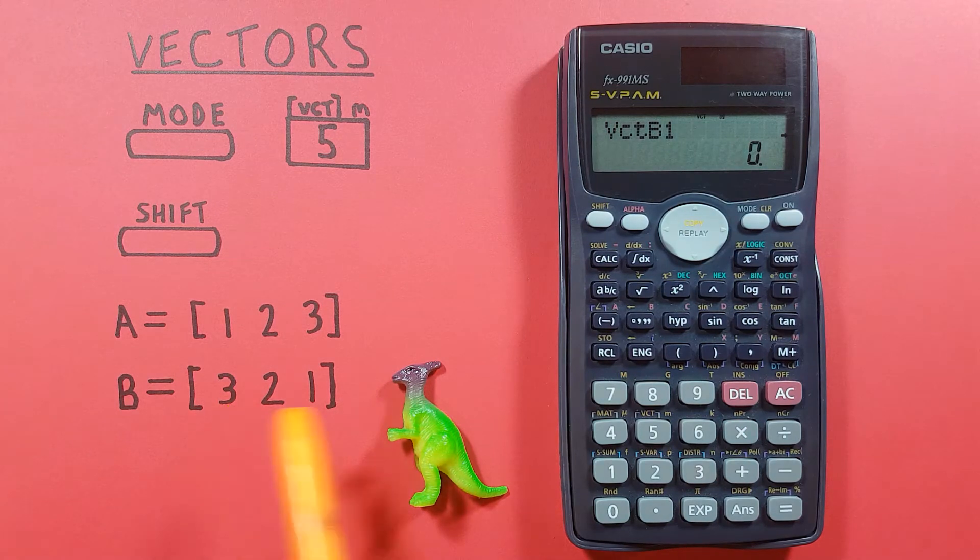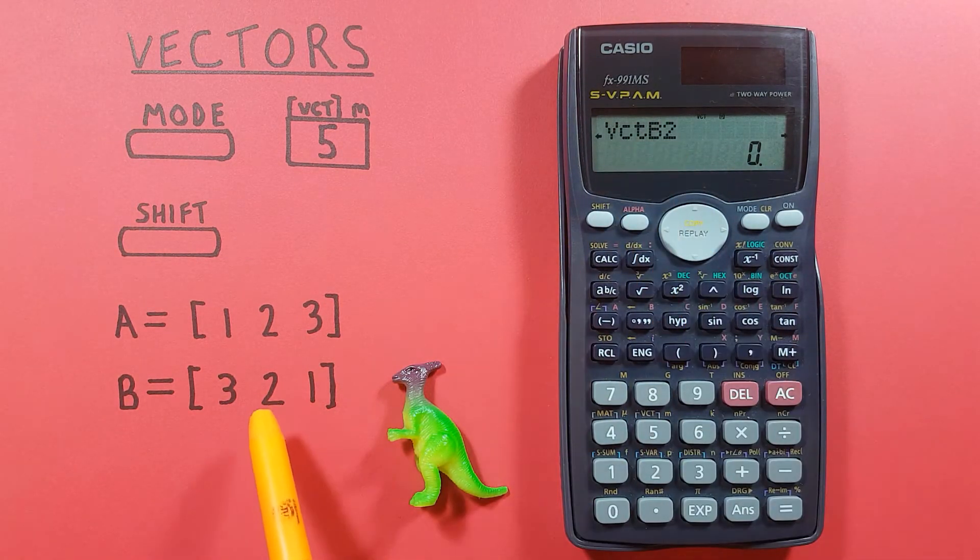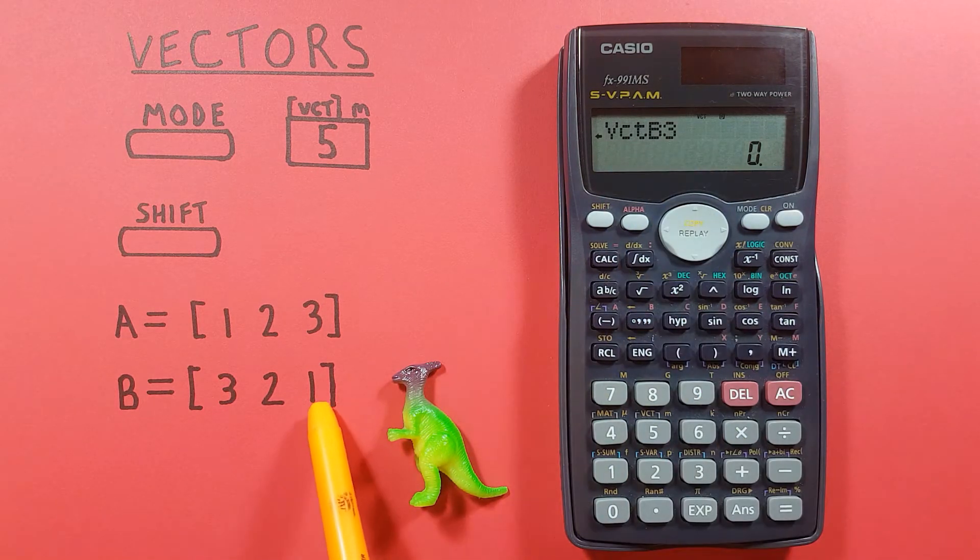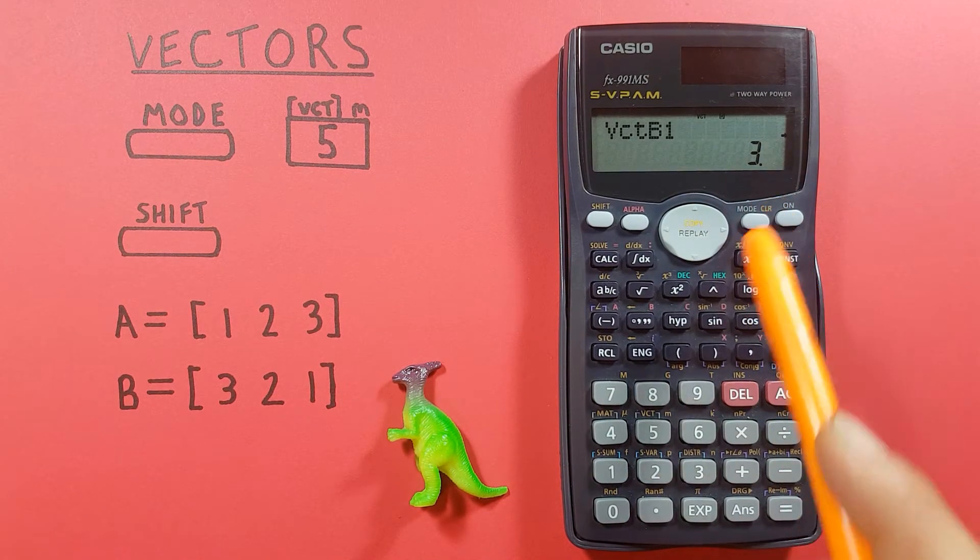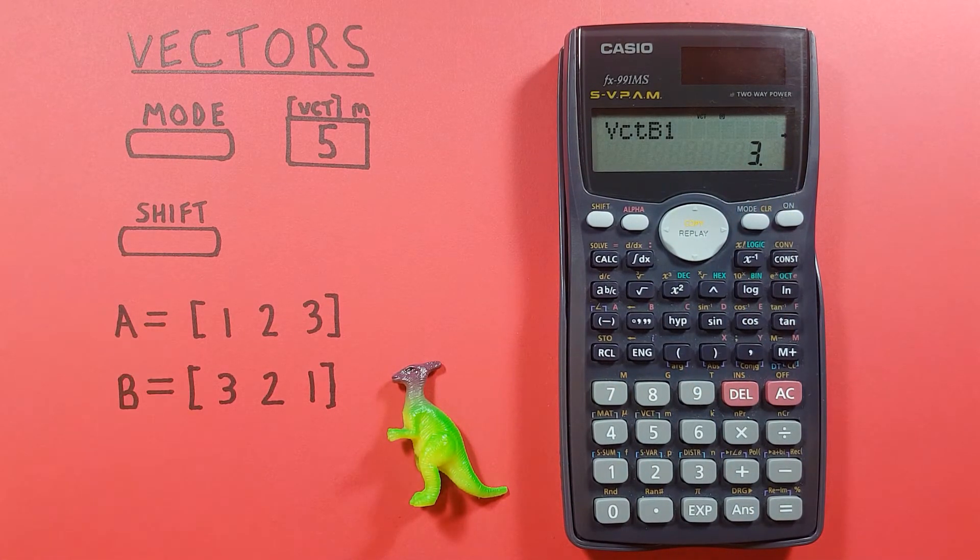For number 1 we're using 3, dimension 2 we're using 2, and for the third dimension we're using 1. There we go and again it cycles back. So we've got both of our vectors entered now.